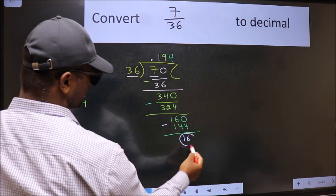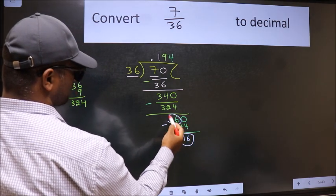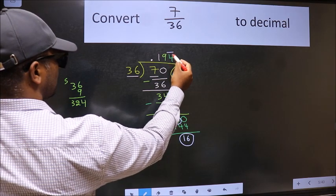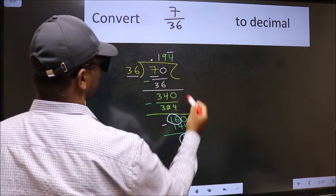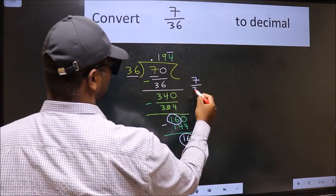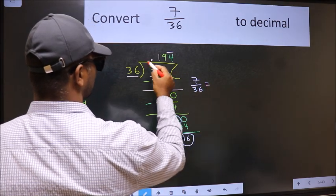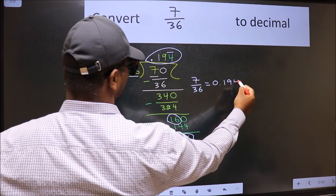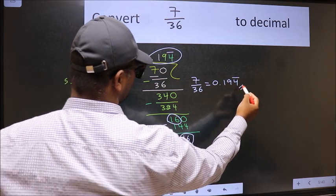We got 16 again. Earlier also we got 16. That means we get bar on this number. Therefore, decimal of 7 by 36 is this one: 0.194 with bar on 4 is our answer.